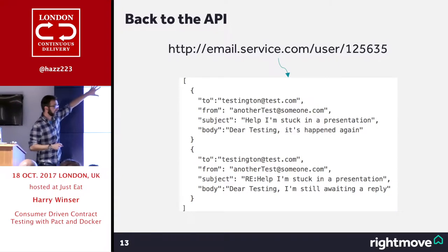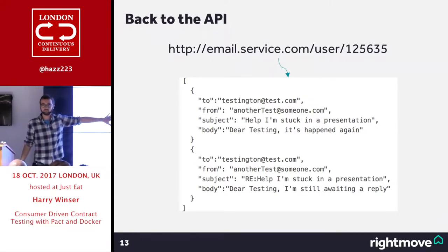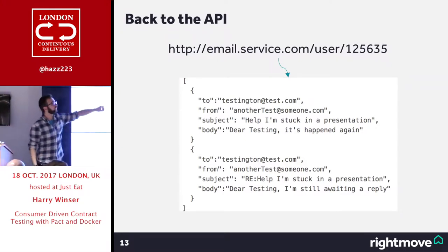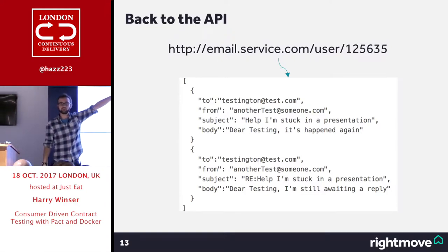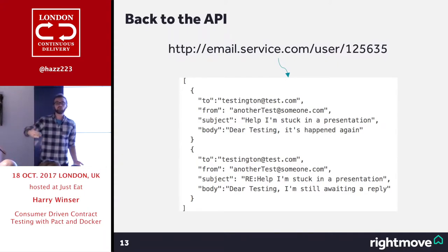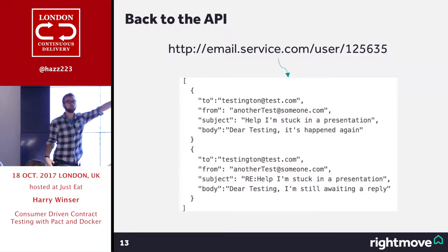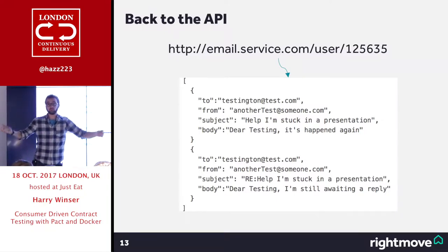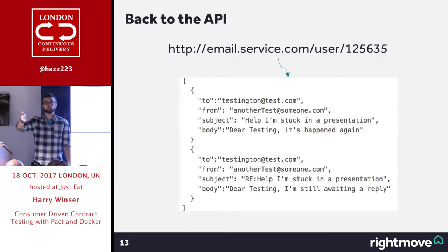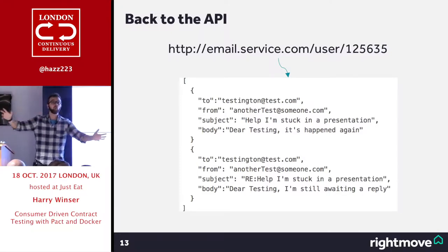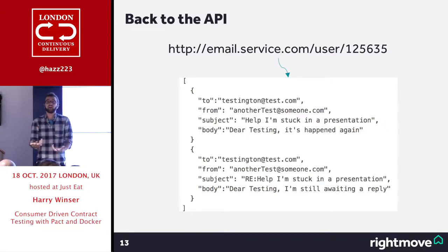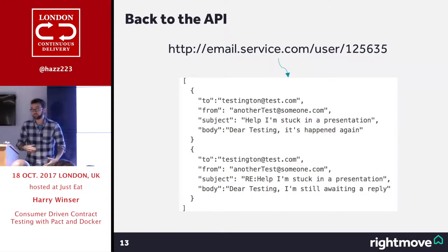Another important thing: consumer-driven contracts should define your errors — this isn't just your happy path. What happens if you send a request and that user doesn't exist? In your consumer code you say: if I send that request and the user doesn't exist, I expect a 404. But if your provider goes 'you defined a non-existent user, I'll send back an empty array,' then from the consumer perspective you've got an empty array and you treat it as if the user exists — then everything explodes somewhere else. You need to define those error codes between the two services.